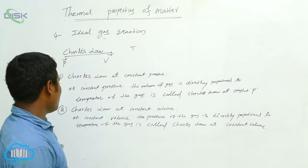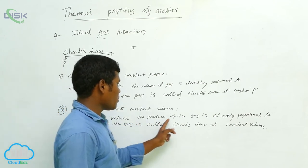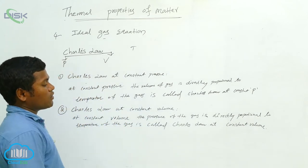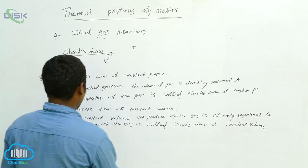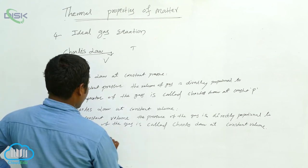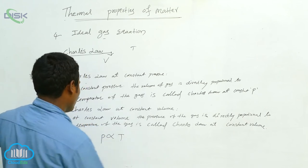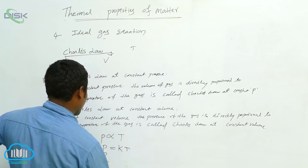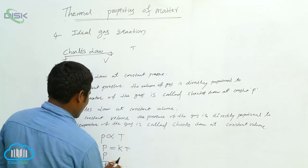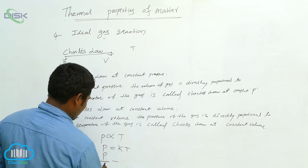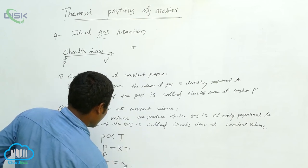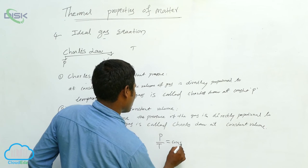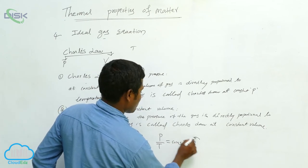What is Charles' Law at constant volume? At constant volume, the pressure of the gas is directly proportional to the temperature of the gas — this is called Charles' Law at constant volume. Then we write: pressure is directly proportional to temperature, so P proportional to T. Remove the proportional sign, write K. Then P by T is equal to constant.